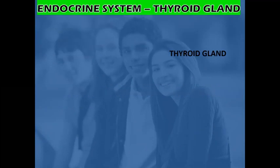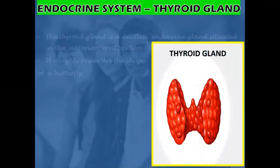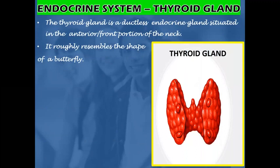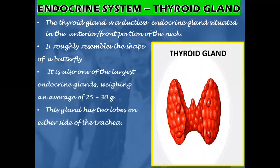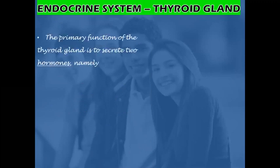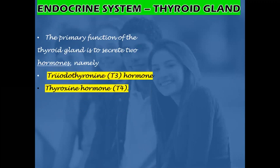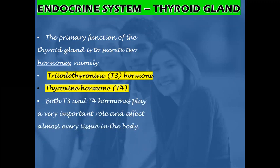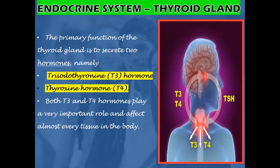The thyroid gland is a ductless endocrine gland situated in the anterior front portion of the neck. It roughly resembles the shape of a butterfly. It is also one of the largest endocrine glands, weighing an average of 25 to 30 grams. This gland has two lobes on either side of the trachea. The primary function of the thyroid gland is to secrete two hormones: triiodothyronine (T3) and thyroxine (T4). Both T3 and T4 hormones affect almost every tissue in the body.